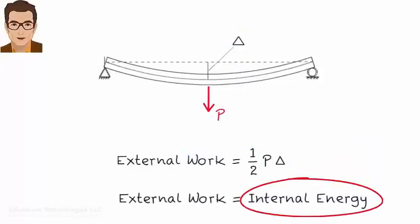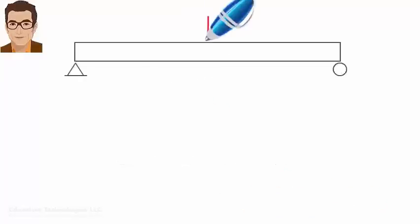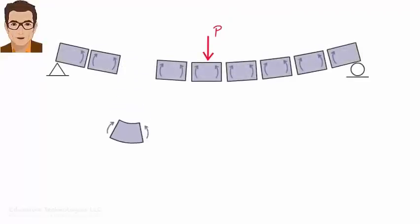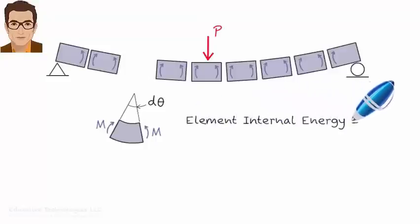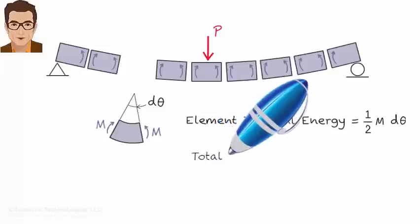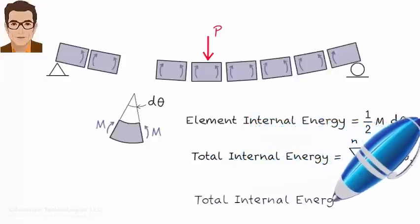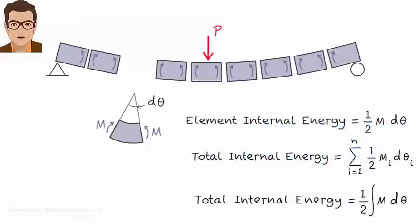Let's see how we can come up with a mathematical expression for internal energy for this beam. Imagine the beam is divided into small elements, each carrying an internal bending moment. Each element undergoes a small amount of deformation caused by the internal bending moment — let's refer to this deformation as dθ. We can write the internal energy stored in the element as one-half m times dθ. If we sum up the internal energies in all the beam elements, we get the total internal energy. For accuracy and convenience, we generally perform this summation via integration. That is, total internal energy in the beam is one-half times the integral of m dθ.